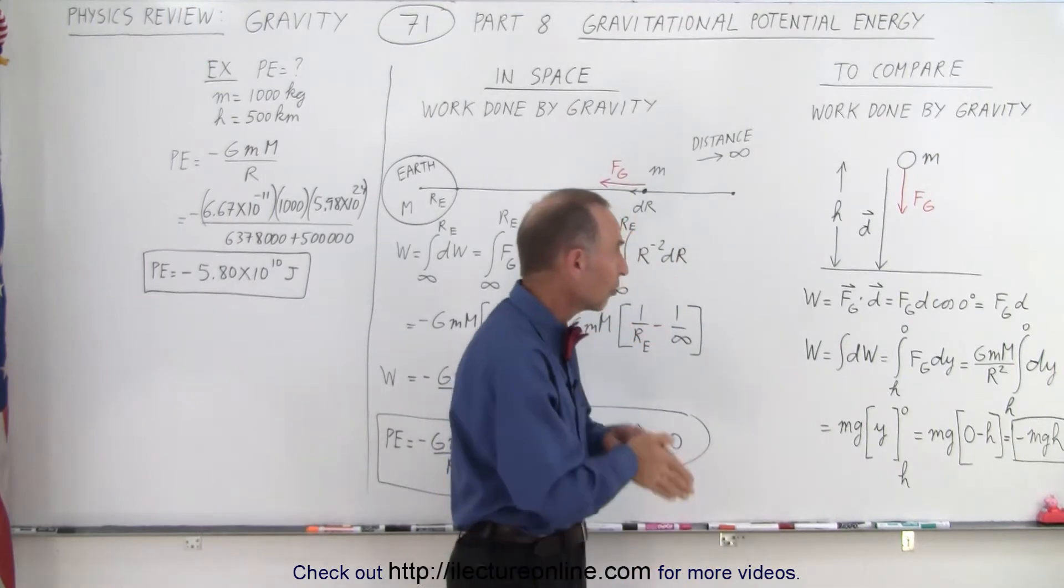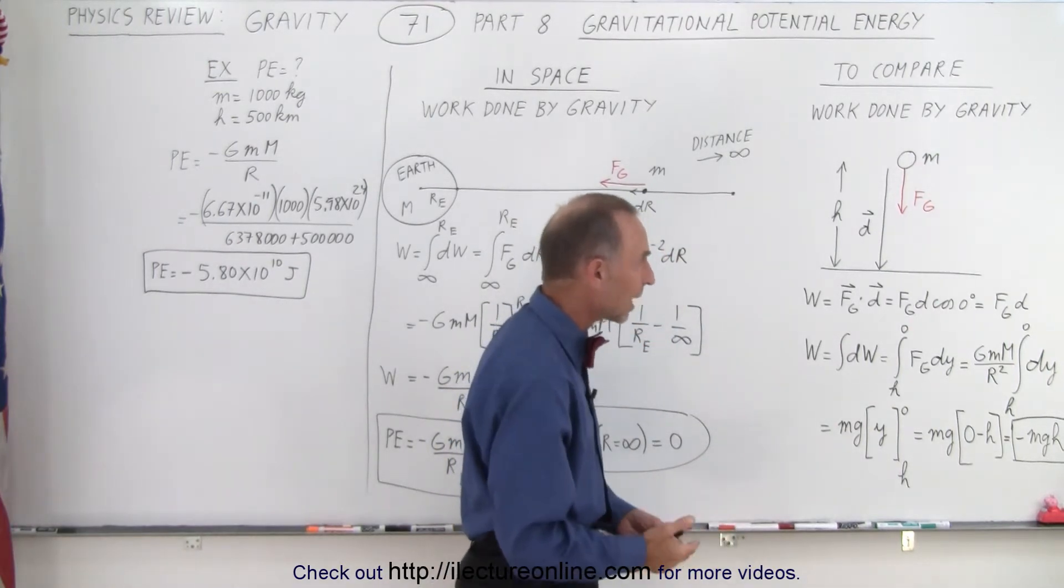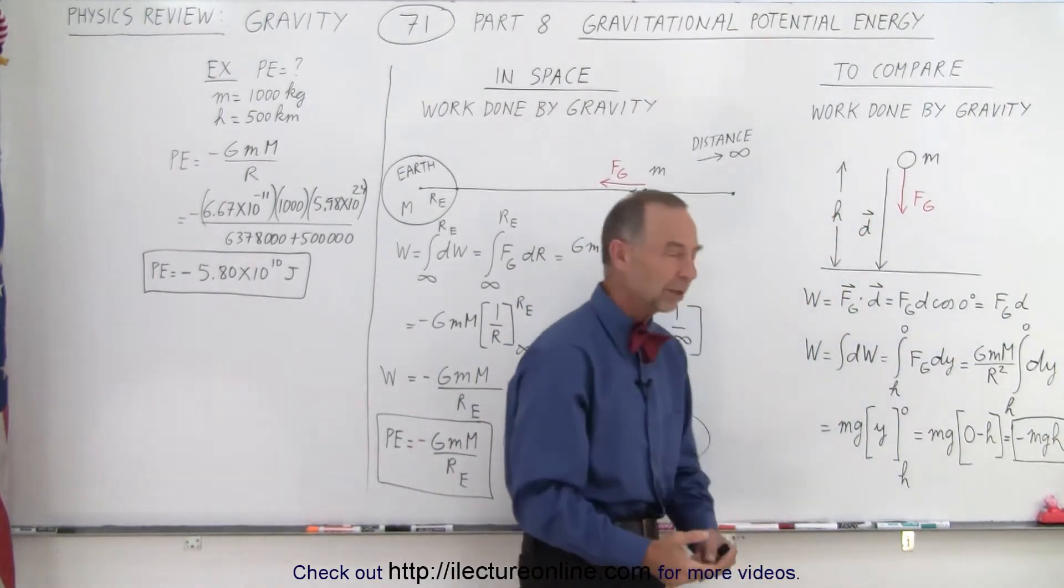But since the direction of the force and the direction of displacement is in the same direction, the angle is zero degrees and the cosine of zero is one. So it's simply a product of the force times the displacement.